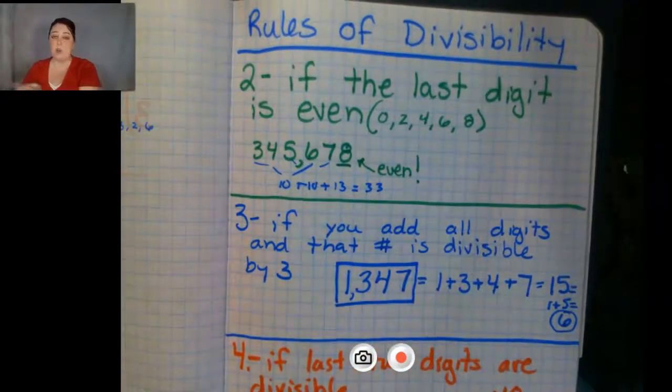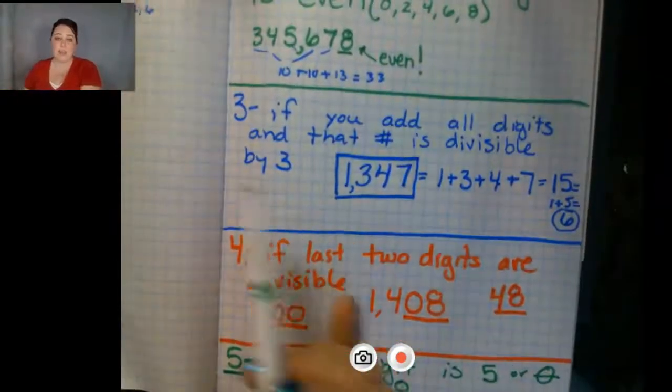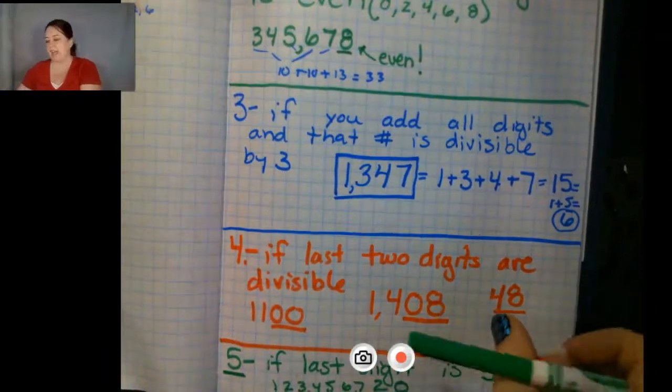Twos, the last digit is even, the whole number is. Three, you add them all up. If that number is divisible, four is the last two digits.